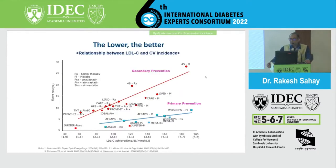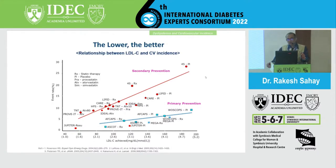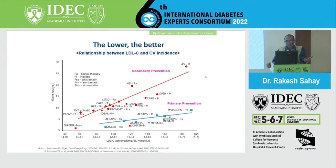Over the years, if you look at outcomes data with the use of statins, whether it is primary prevention or secondary prevention, you can clearly see that studies like the WOSCOPS study, AFCAPS study, and the ASCOT trial have shown that even in primary prevention they work well in terms of reducing cardiovascular outcomes. For secondary prevention, the impact is even greater because people with cardiovascular disease have a much higher risk of recurrent events among patients with diabetes.